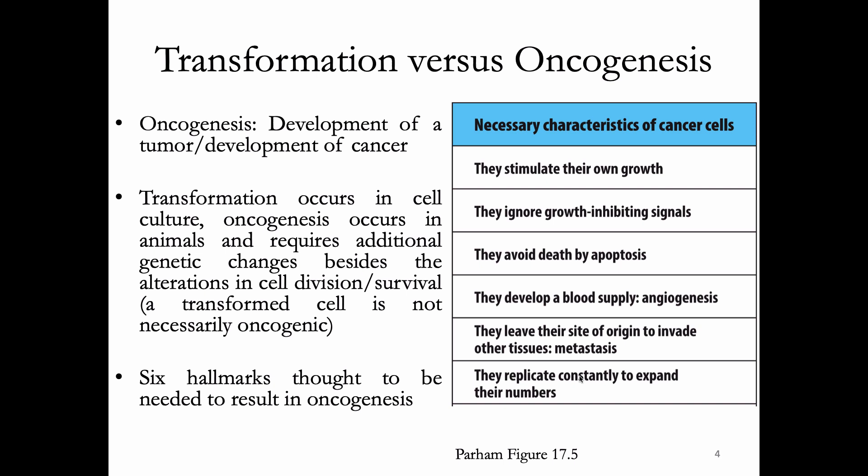Metastasis involves action with the extracellular matrix, modifying the matrix as well as cell movement. That's not important in culture, but is critical if a cell wants to form a tumor in an animal.